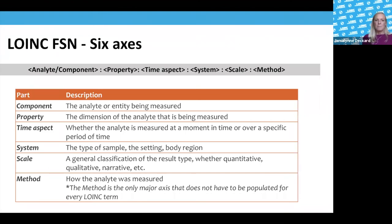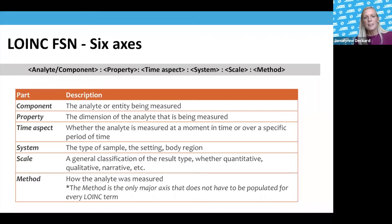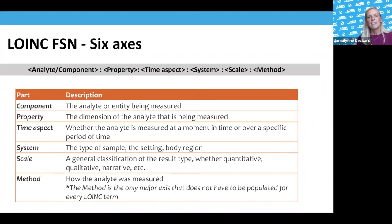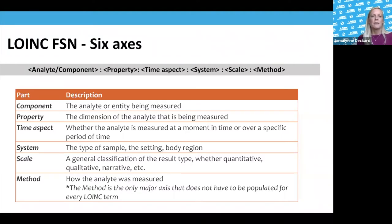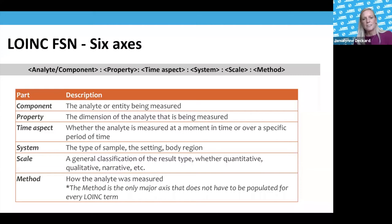For the fully specified name, there are six axes. The first is the component or analyte — we use those interchangeably because in lab you're often talking about an analyte, but in the clinical space, component is what we most commonly refer to. That is the entity or thing being measured. The second axis is the property, which is the dimension of that analyte. We'll go over each of these in detail.